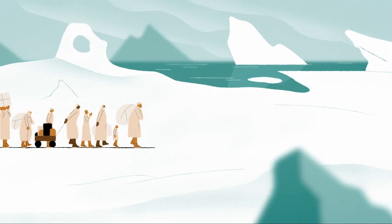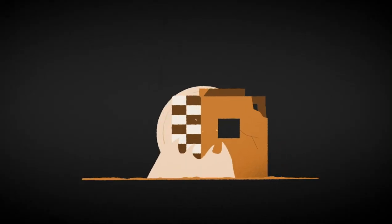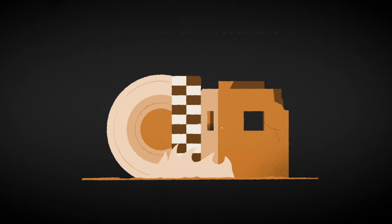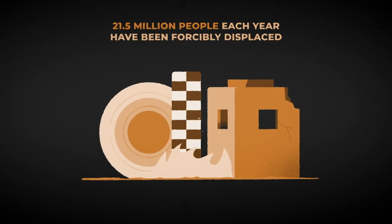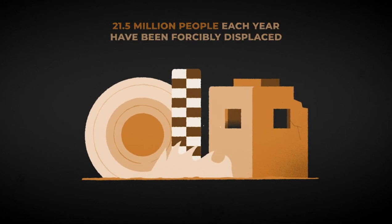Increasingly, more and more people are now pushed to move against their will. Since 2008, each year an average of 21.5 million people have been forcibly displaced because of weather-related and often sudden onset disasters.